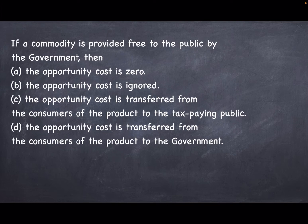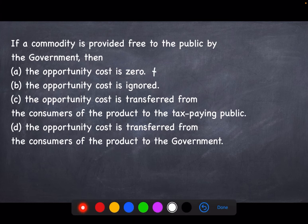If a commodity is provided free to the public by the government, then the options are: (a) the opportunity cost is zero, (b) the opportunity cost is ignored, (c) the opportunity cost is transferred from the consumers of the product to the tax paying public, and (d) the opportunity cost is transferred from the consumer of the product to the government. Now you can certainly eliminate two options: that opportunity cost is zero, and opportunity cost is ignored.